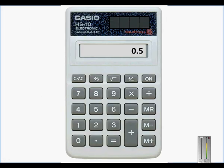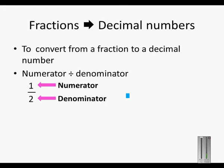So on your calculator, you will go 1 divided by 2. So to convert the fraction to a decimal number, numerator divided by denominator. So 1 divided by 2 will give you 0.5, and we actually write that answer as 0,5.